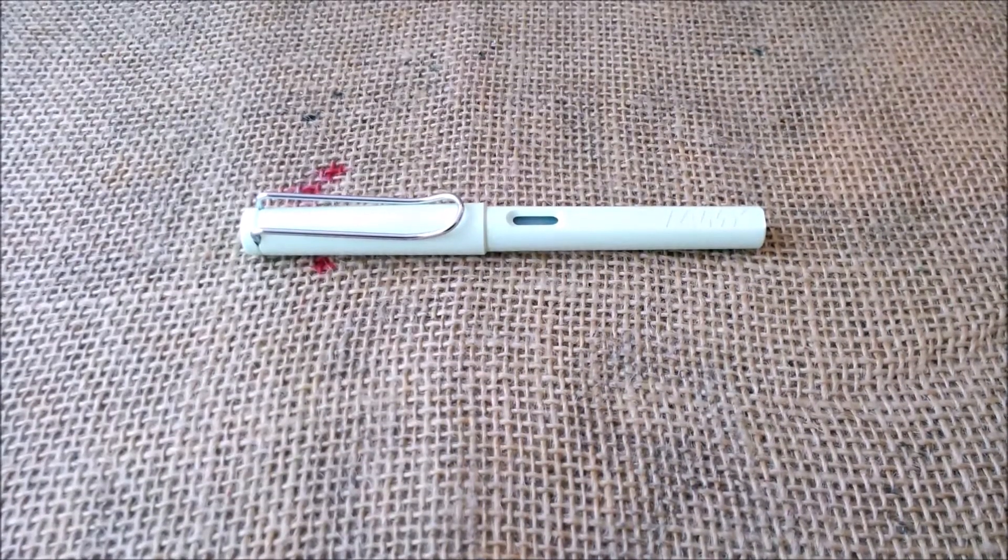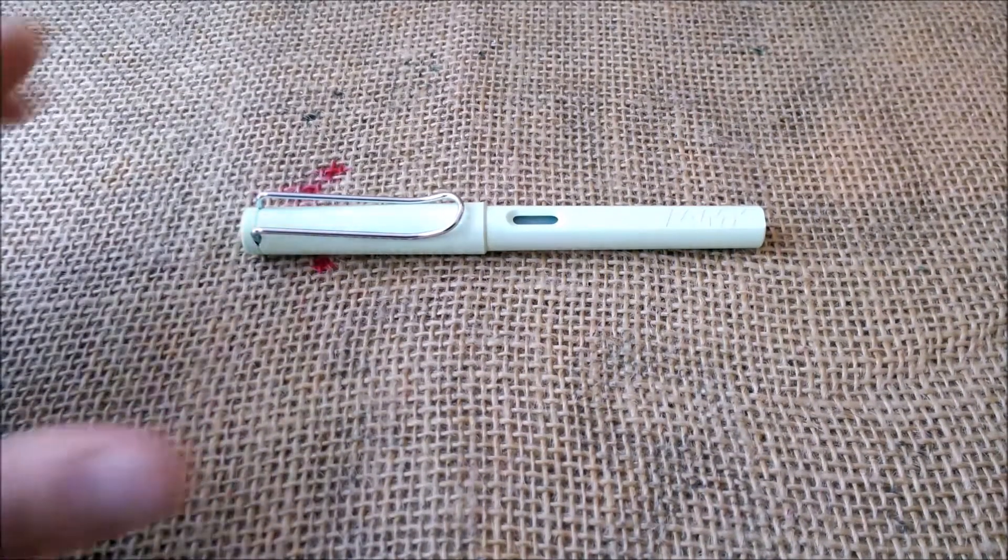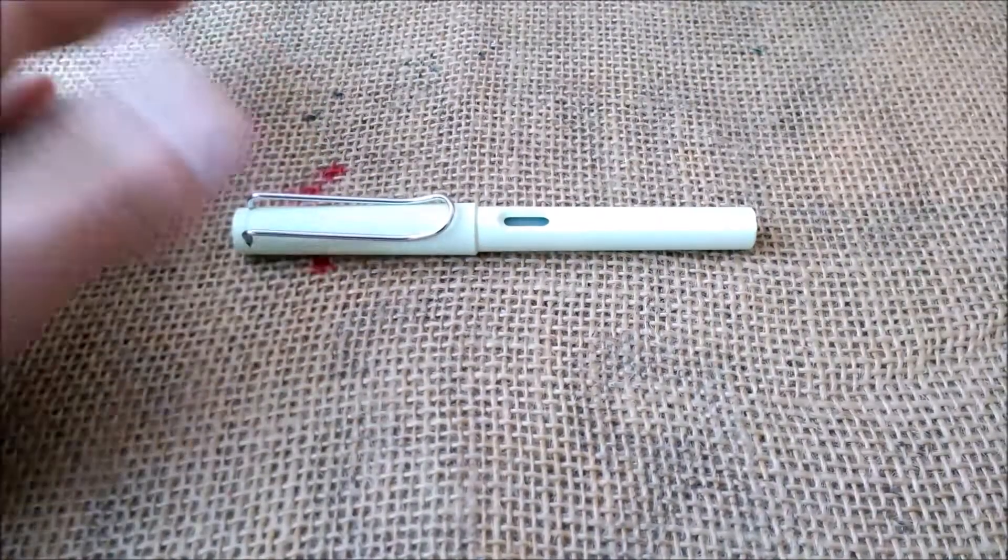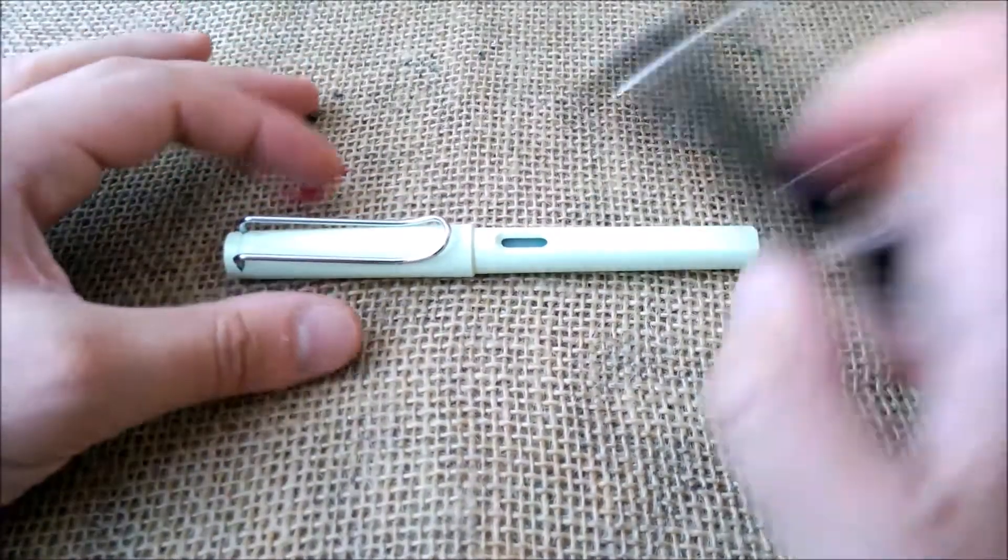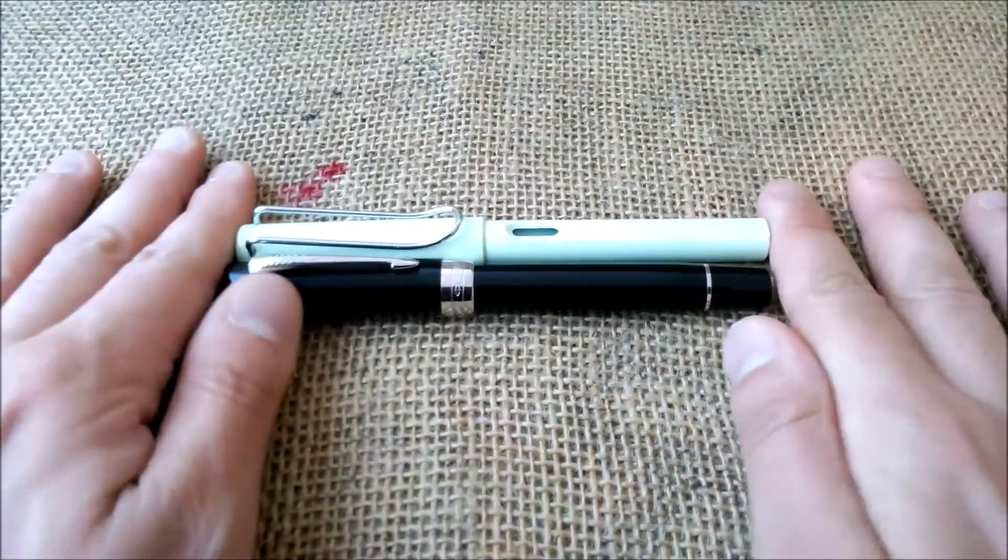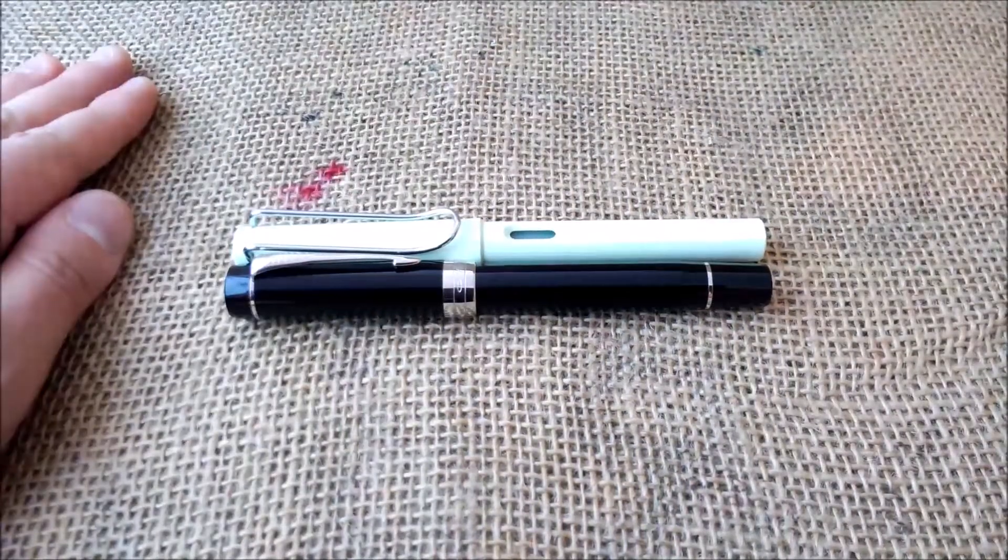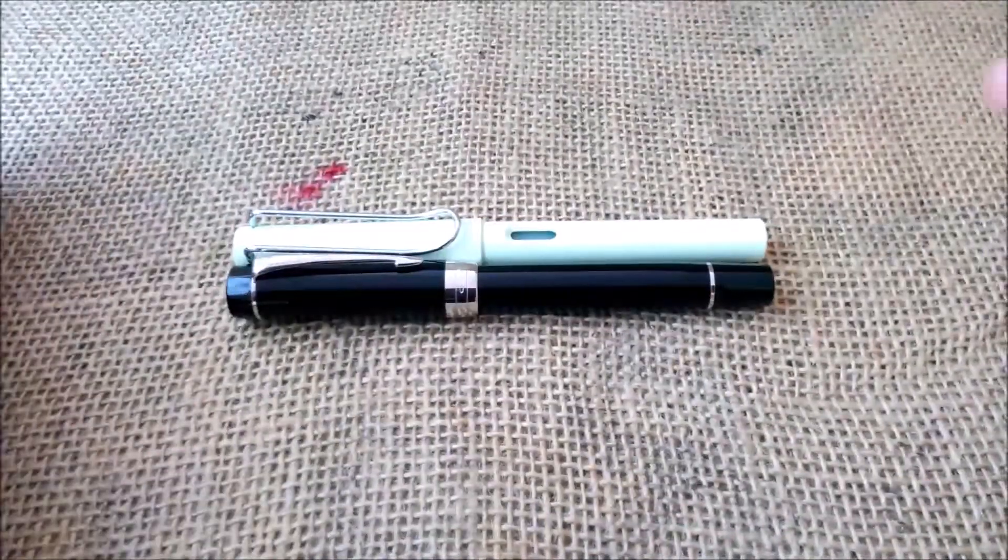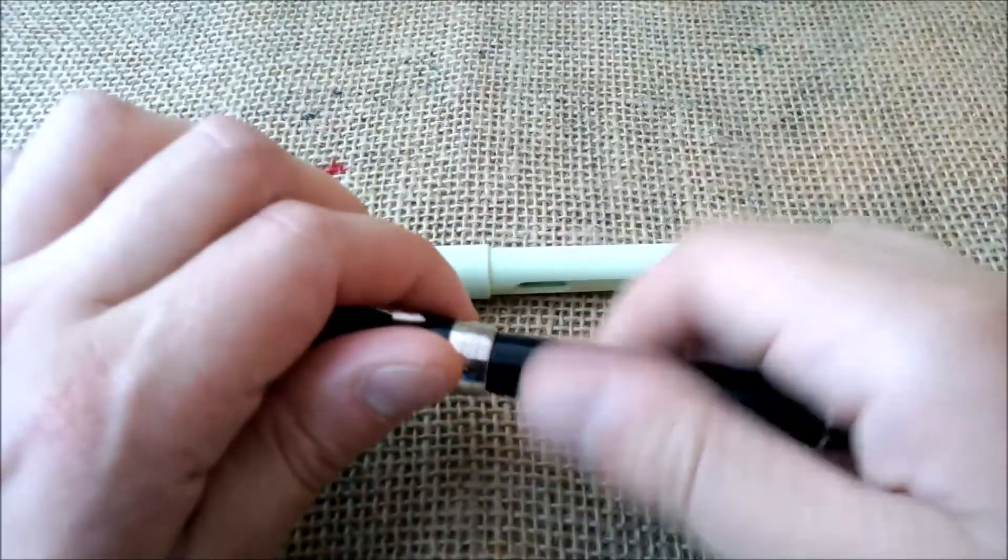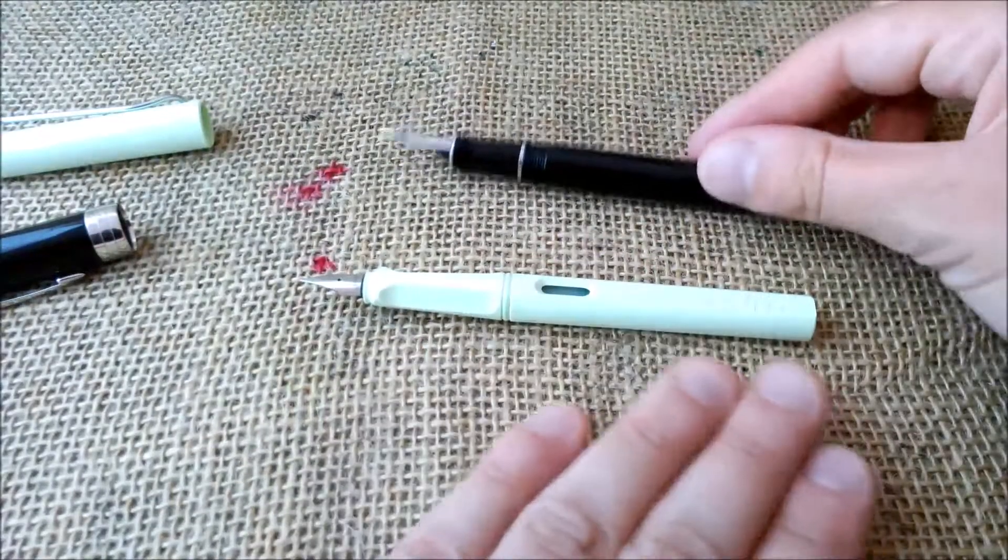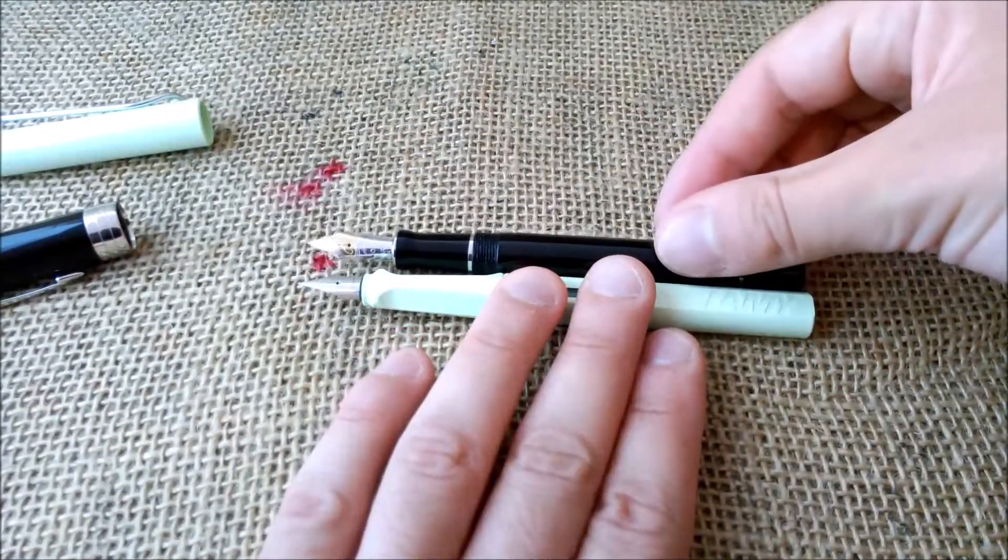I usually make this test comparing some pens with the Lamy Safari and the Parker Centennial Jotter, but because this is a Lamy Safari there's no use of comparing it with another Lamy Safari. Let's just put it next to the Parker Centennial Jotter. As you can see they are of the same size. This is heavier of course because it has heavier acrylics, but it has the same size.